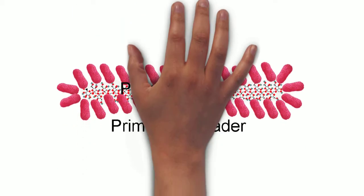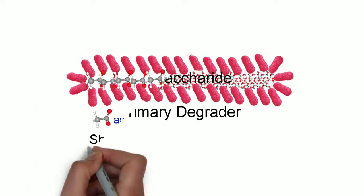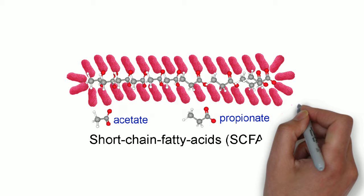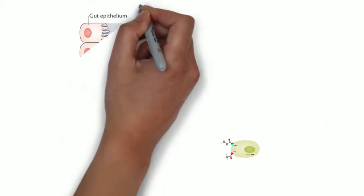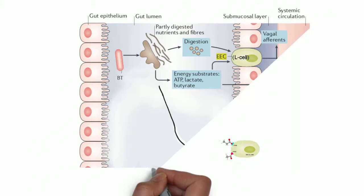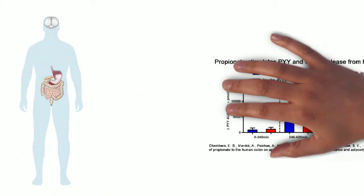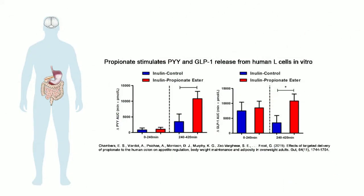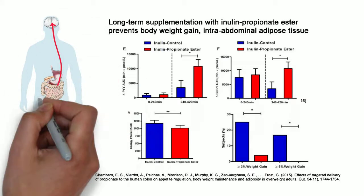The primary degrader of polysaccharide, Bt, produces short-chain fatty acids — acetic and propionic. Acetate and propionate activate free fatty acid receptors FFA2 and FFA3 on L-cells. These hormones increase gut transition time, which helps reduce food intake, and they also travel to the hypothalamus to trigger appetite cessation.